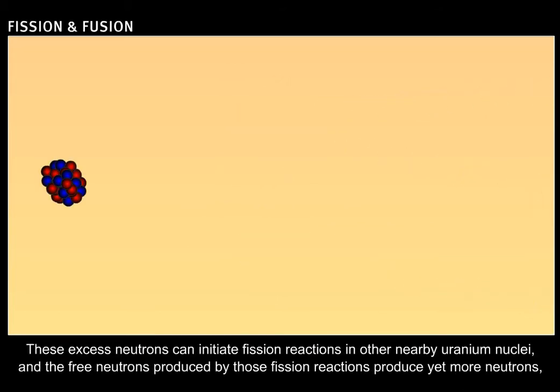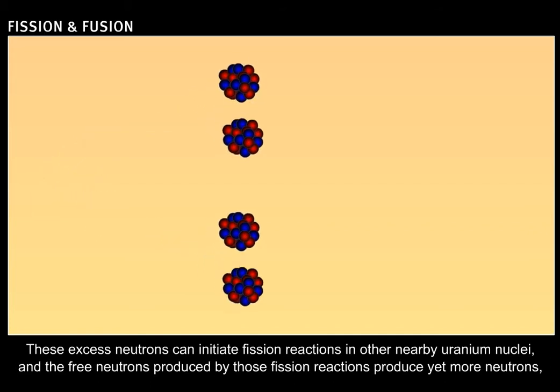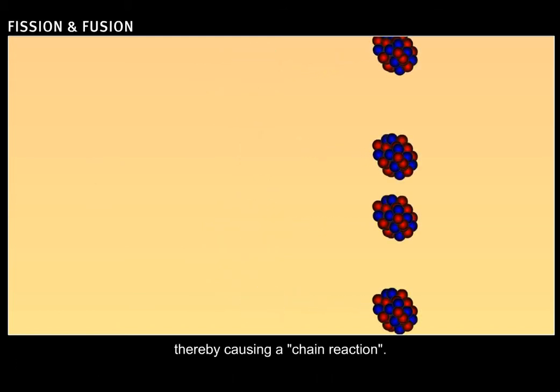These excess neutrons can initiate fission reactions in other nearby uranium nuclei, and the free neutrons produced by those fission reactions produce yet more neutrons, thereby causing a chain reaction.